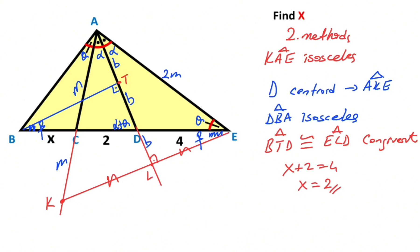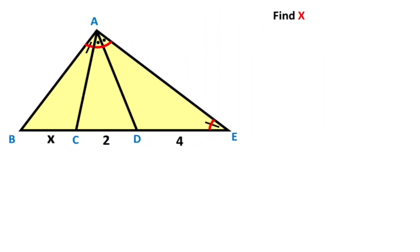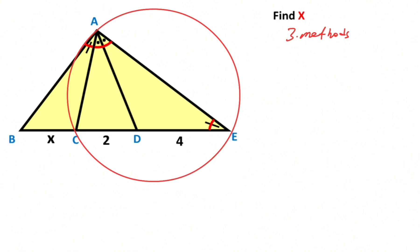This was the second method. Now we will calculate the value of X using the third method. If you notice that these two angles are equal, therefore if we draw the circumcircle of triangle ACE, it passes through point A, point C, and point E.